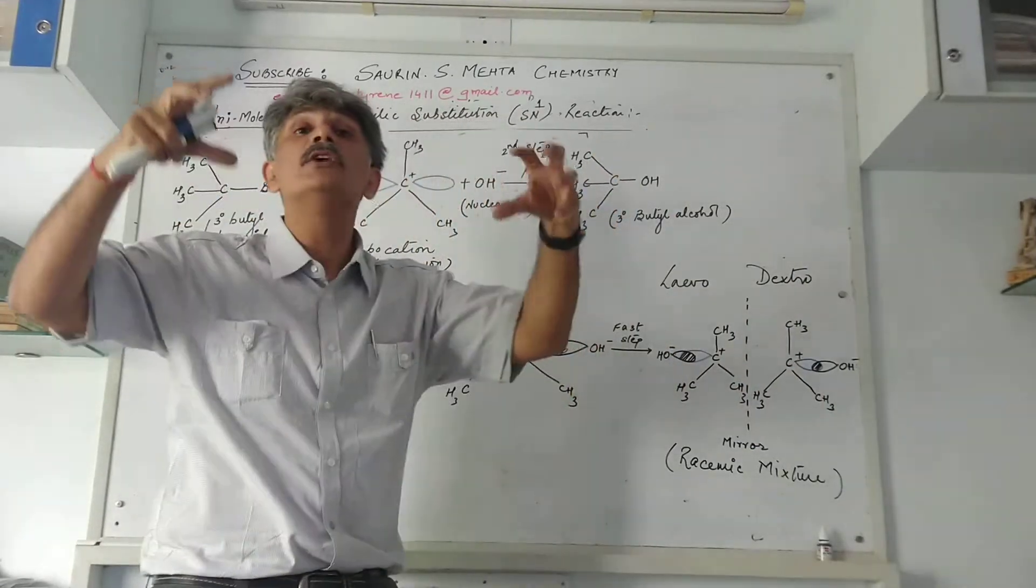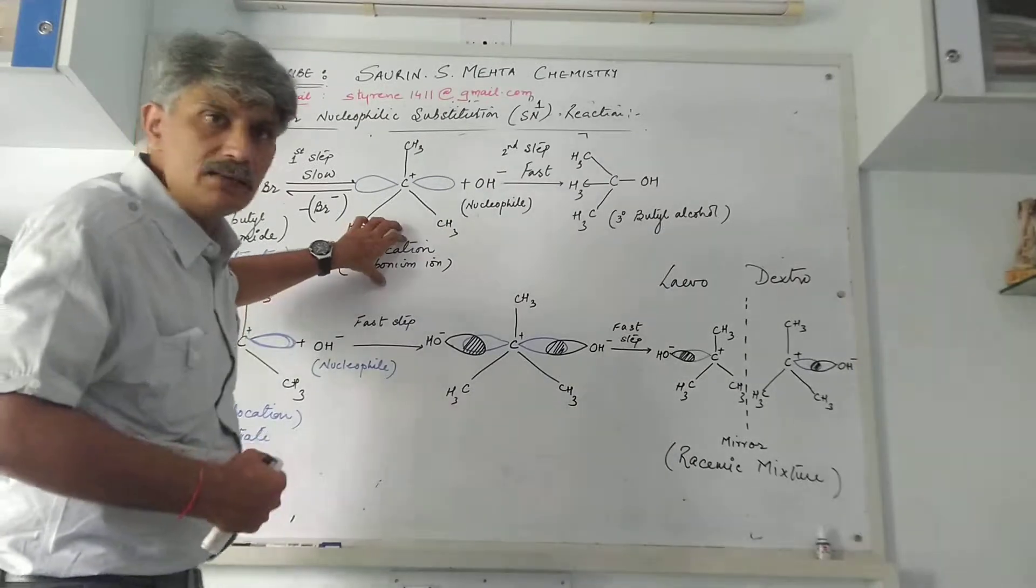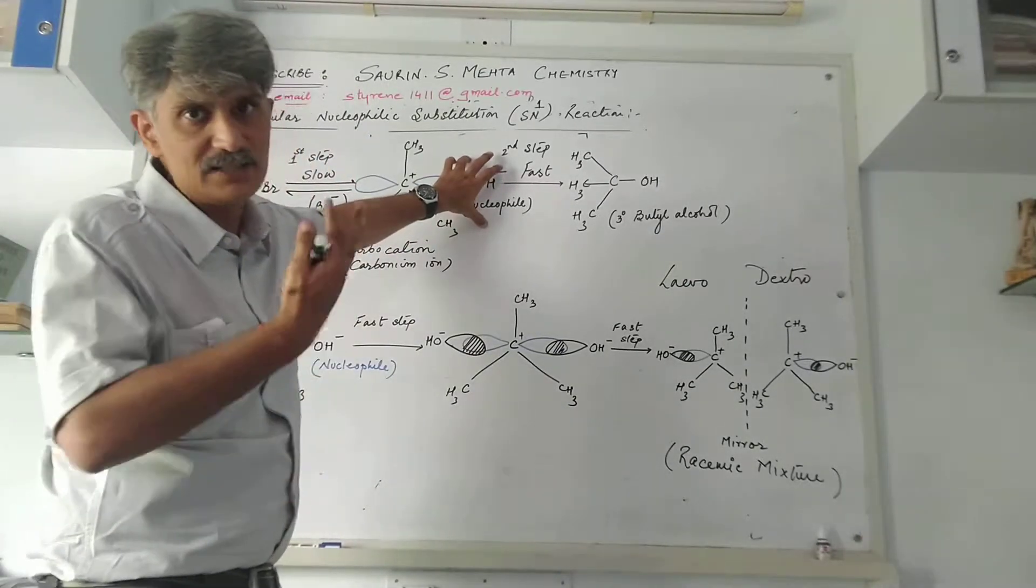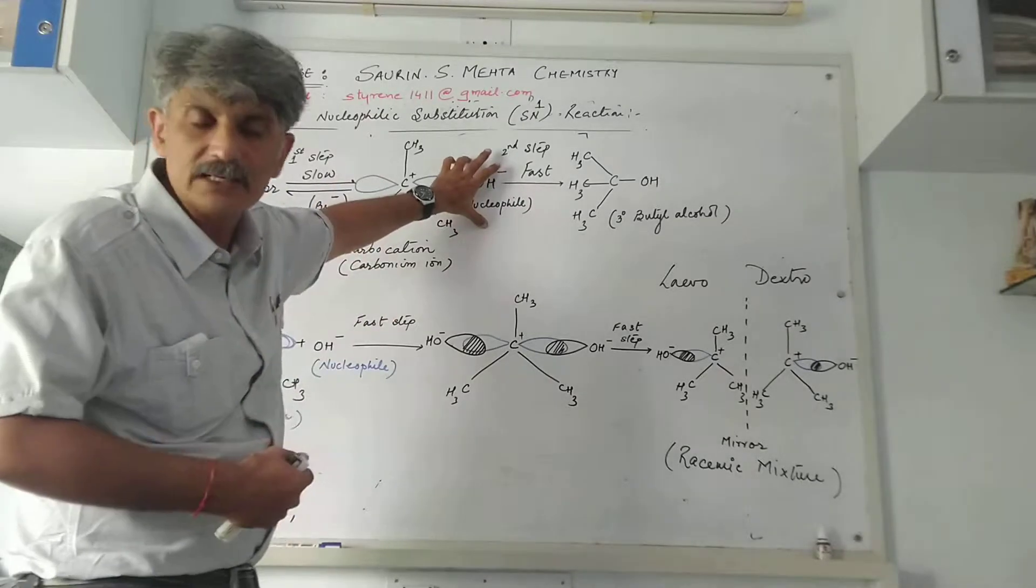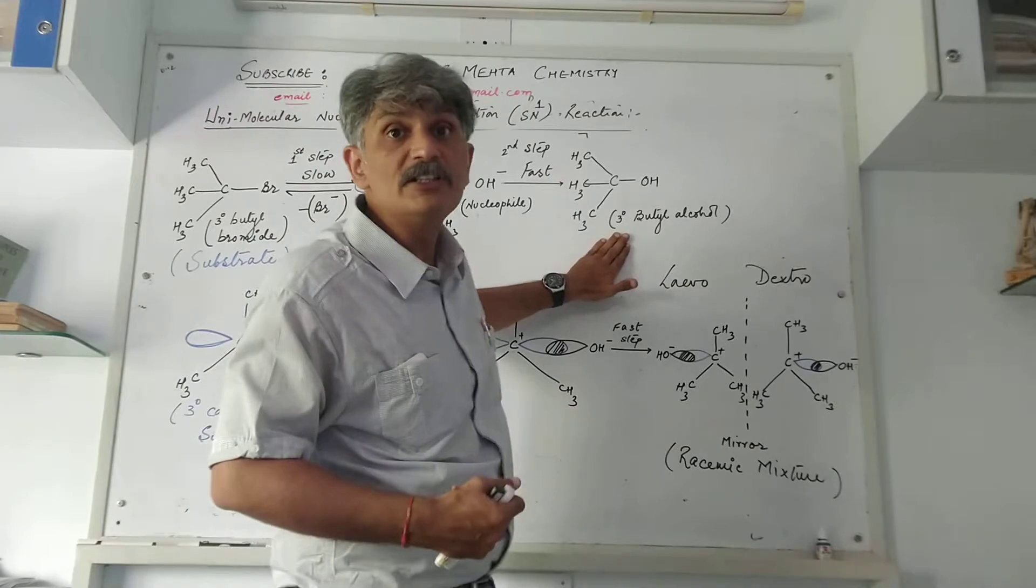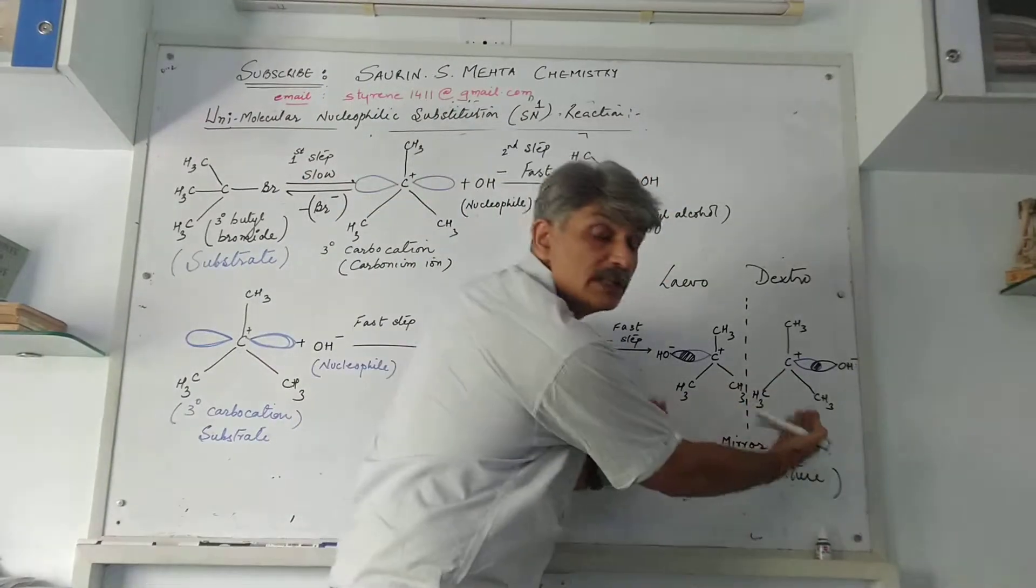The carbocation undergoes reaction with the nucleophile, potassium hydroxide. This is a fast stage that finally produces tertiary butyl alcohol, formed as a racemic mixture.